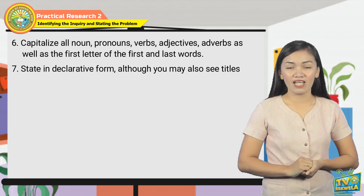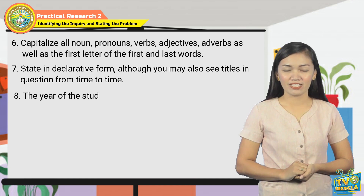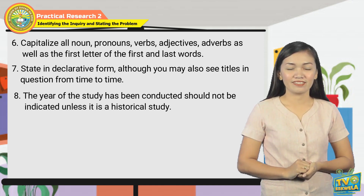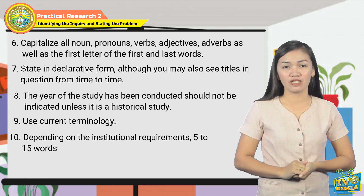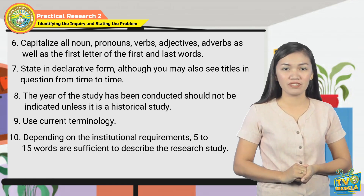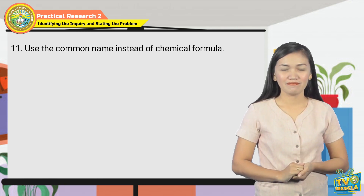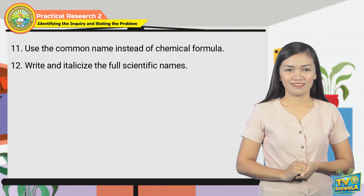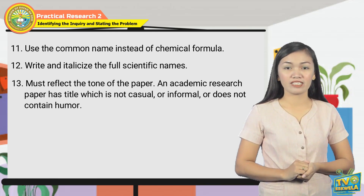Number 7: state in declarative form, although you may also see titles in question form from time to time. Number 8: the year the study was conducted should not be indicated unless it is a historical study. Number 9: use current terminology. Number 10: depending on institutional requirements, five to fifteen words are sufficient to describe the research study. Number 11: use the common name instead of chemical formula. Number 12: write and italicize the full scientific names. The title must reflect the tone of the paper — an academic research paper has a title which is not casual, informal, or humorous.